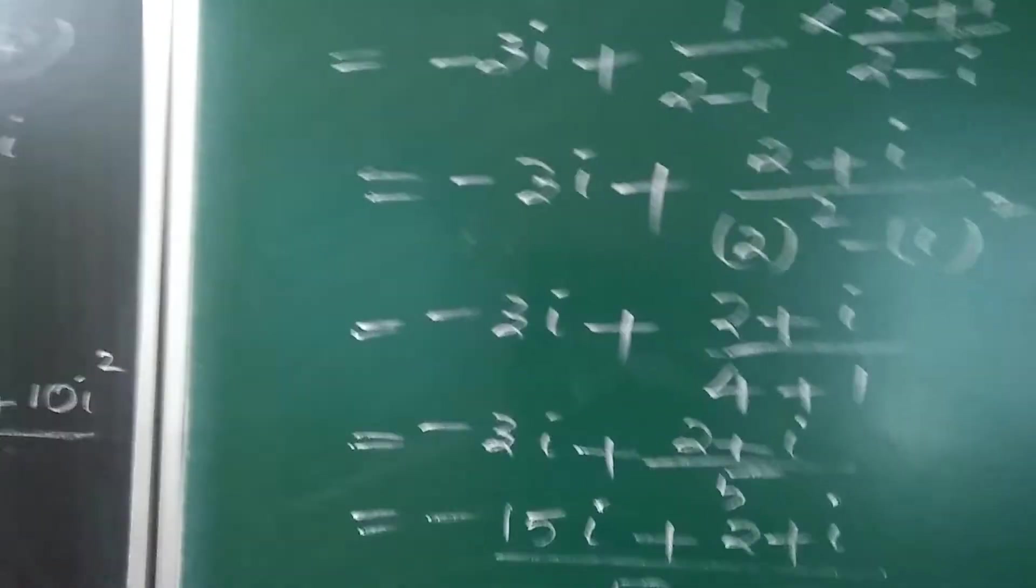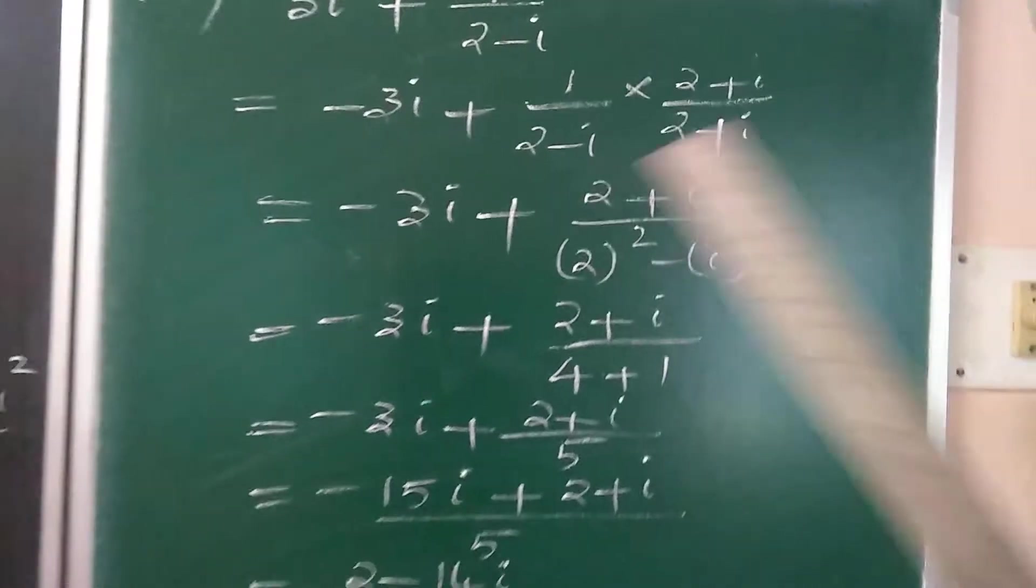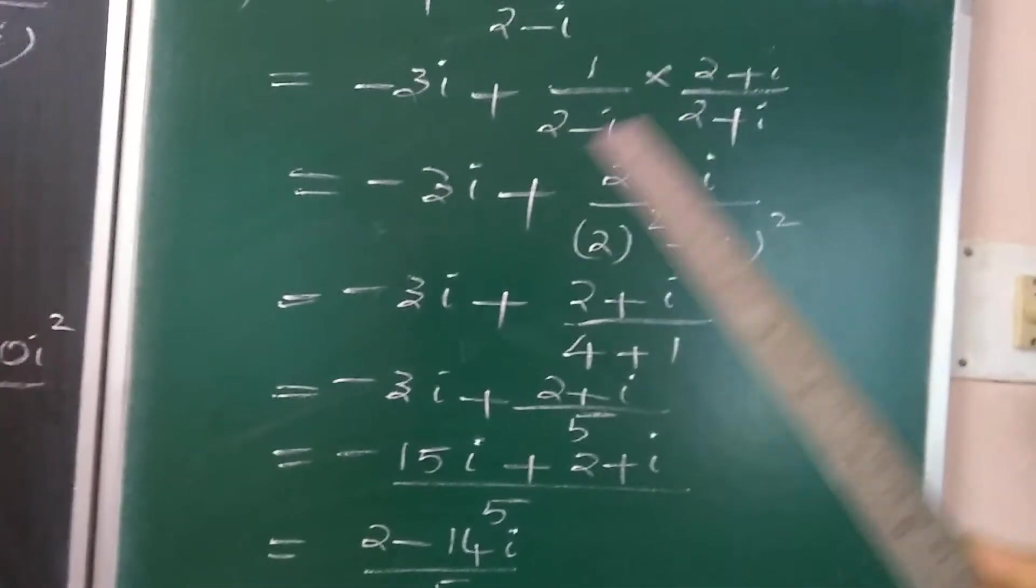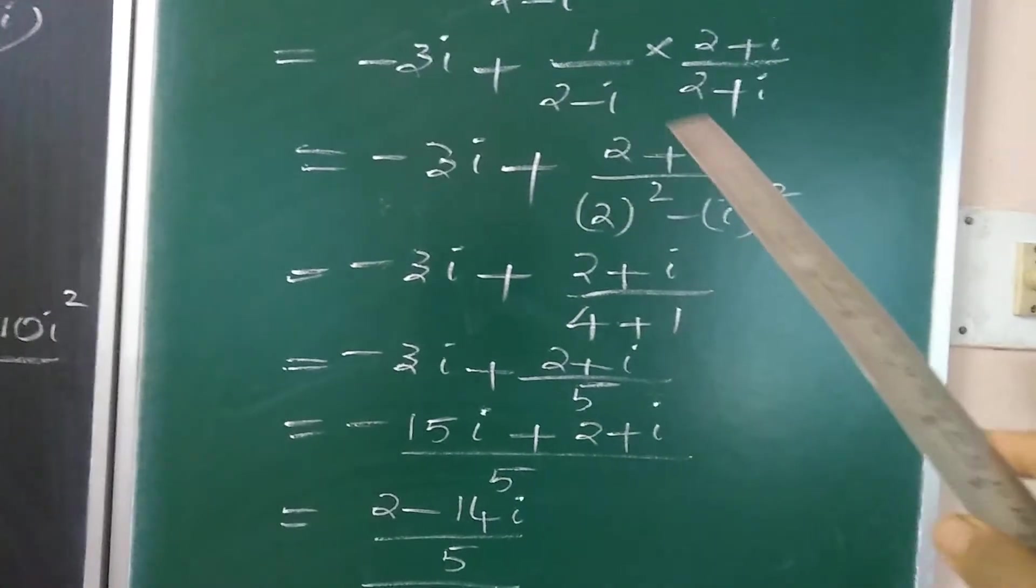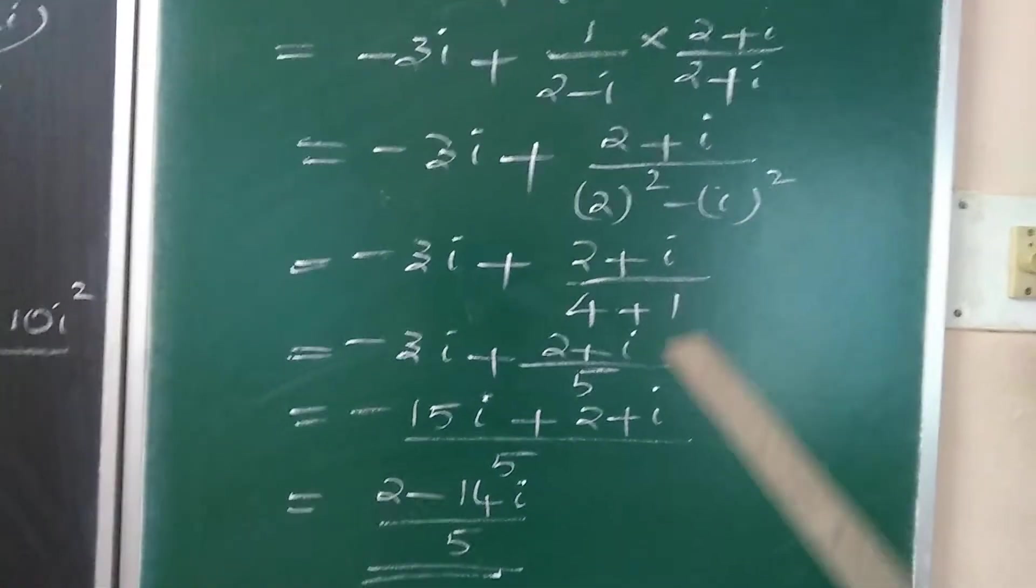We multiply and divide by 2 plus i. It is minus 3i plus 2 plus i divided by, this is a minus b into a plus b, so a square minus b square: 2 square minus i square.